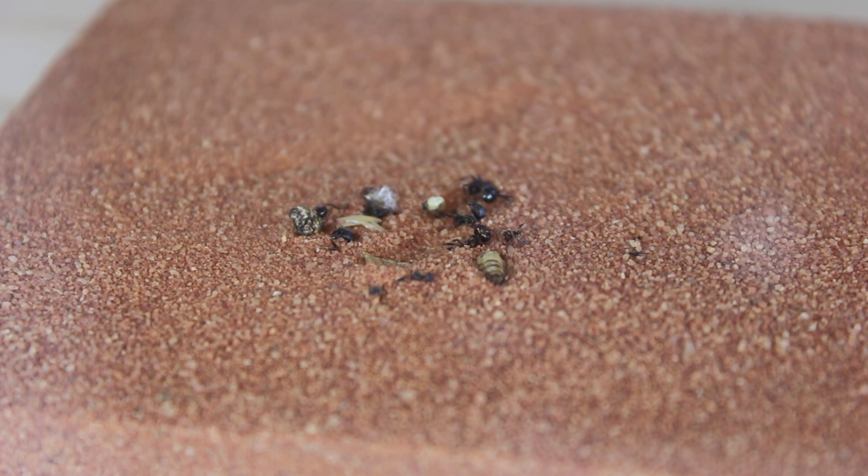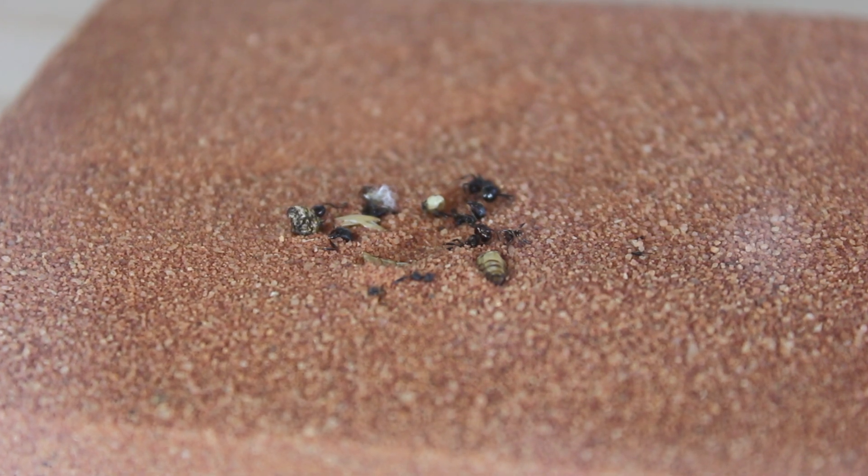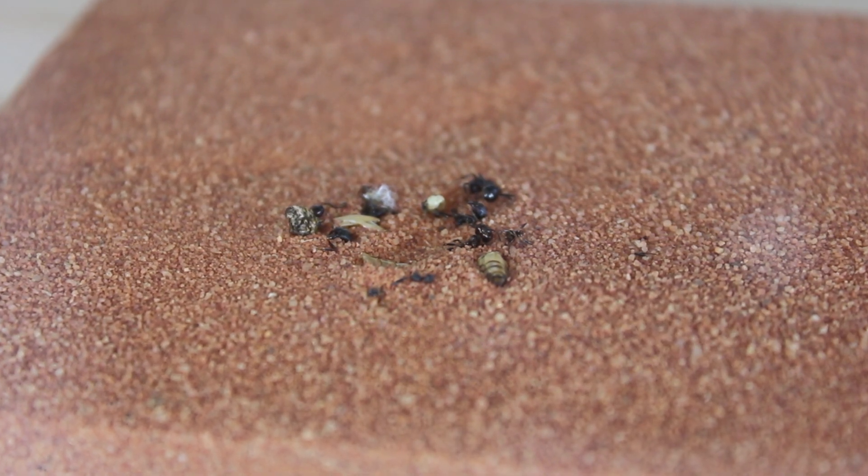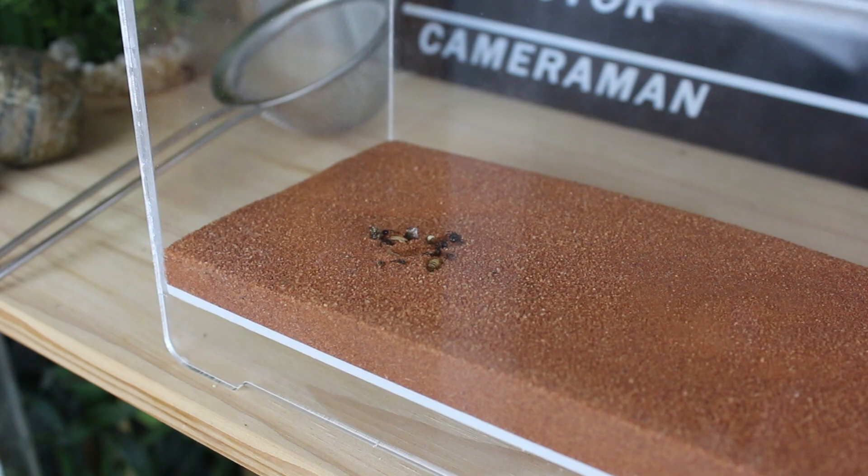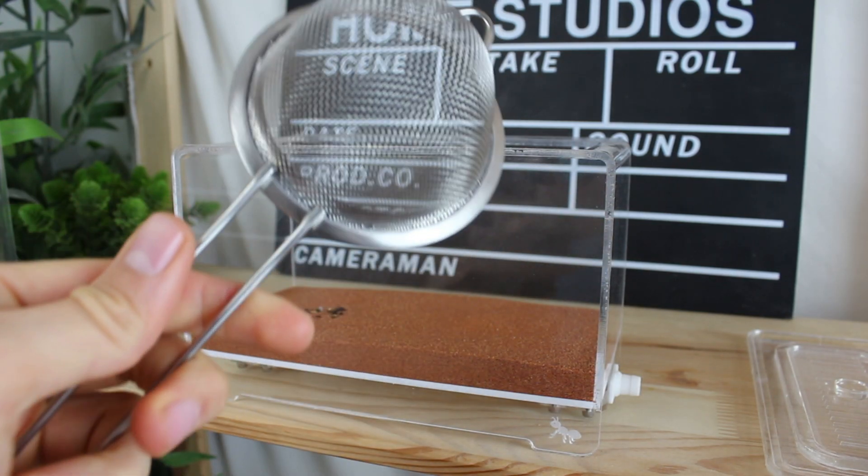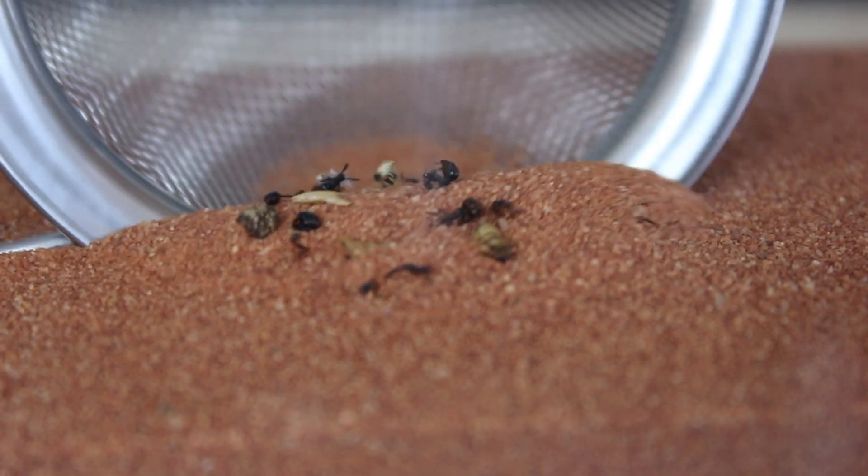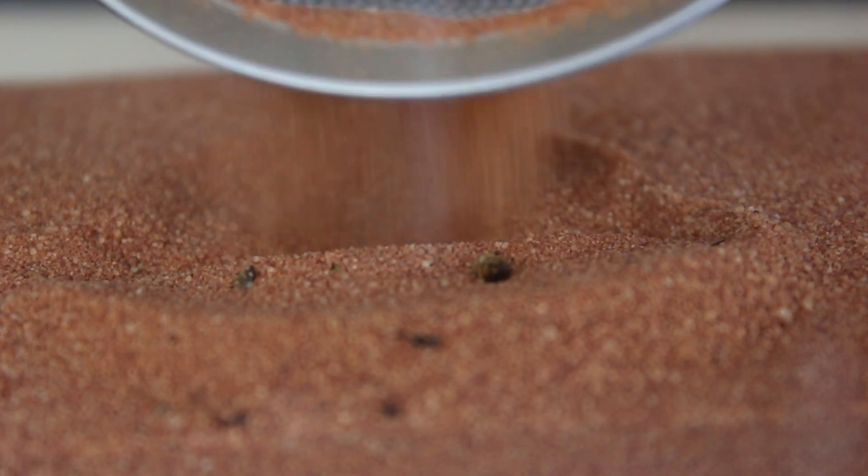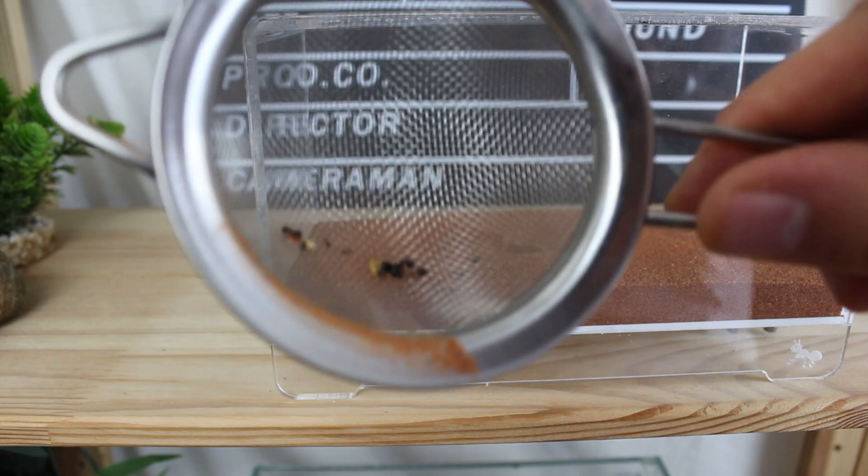One thing which a lot of people struggle with is collecting ant rubbish from fine sand or soil because it tends to seep into it. One thing you can try is a mini mesh sifter. This can easily scoop up any dirt and filter out any dead workers or insect carcasses.